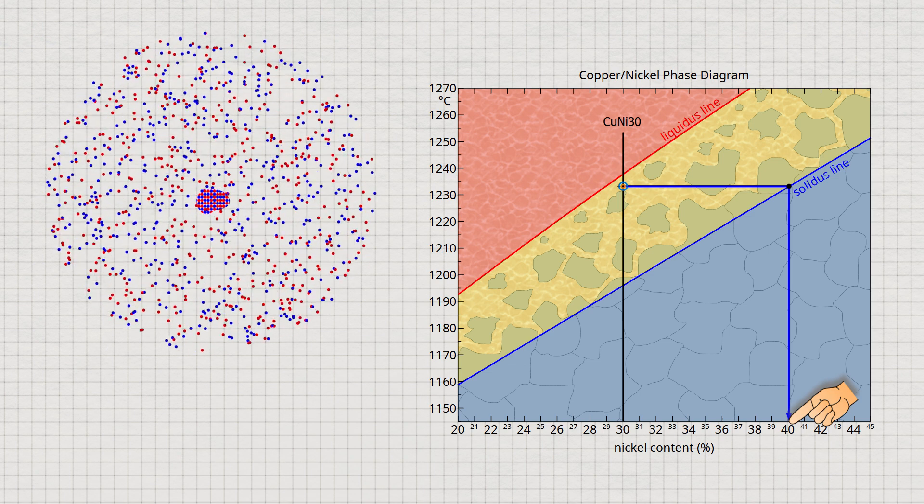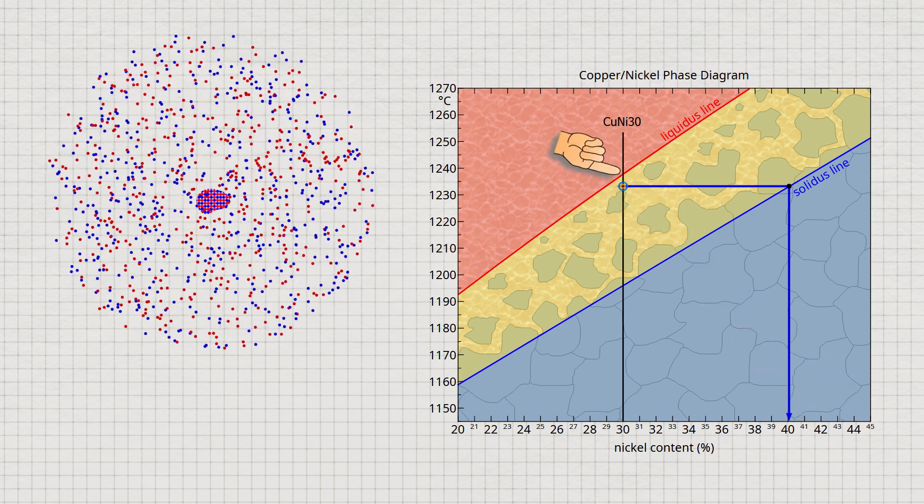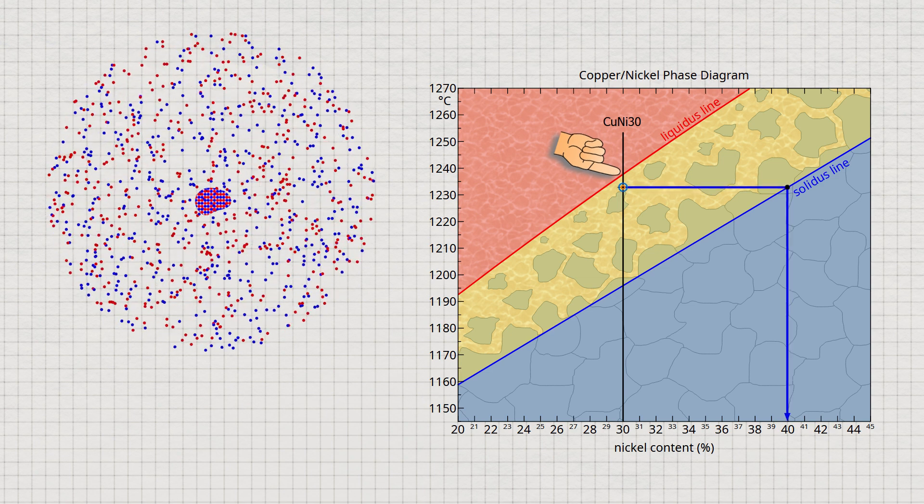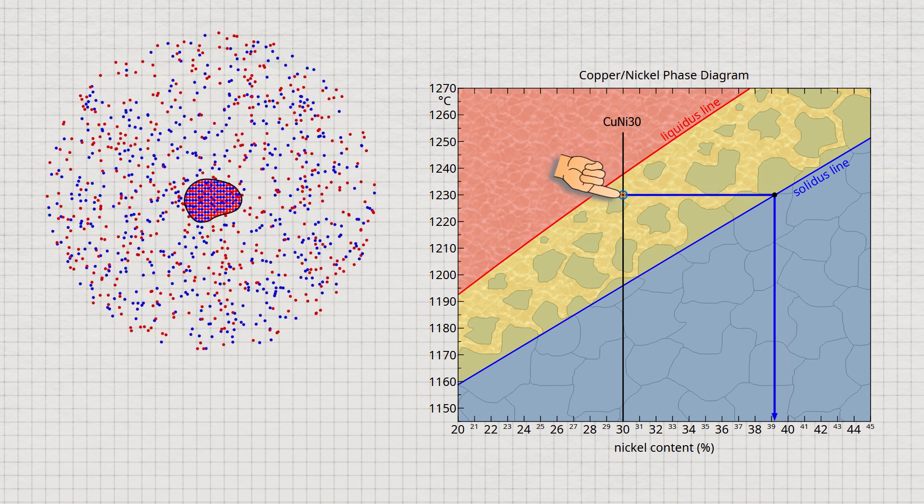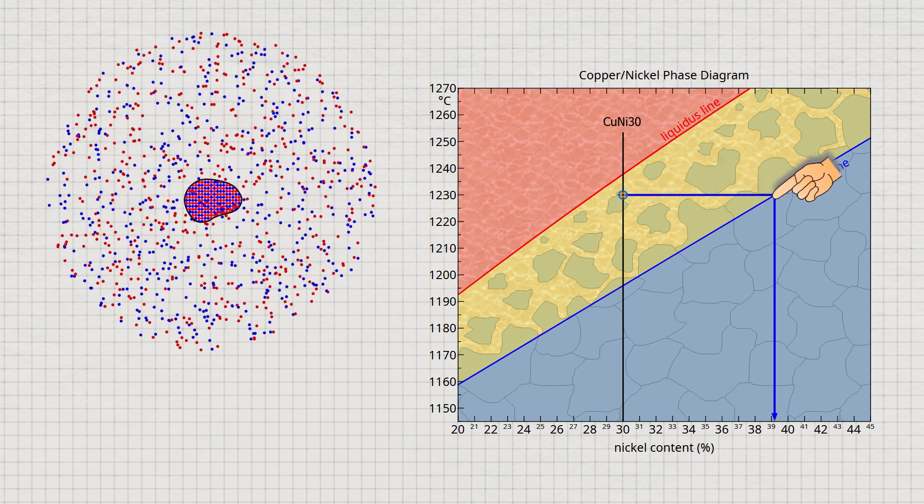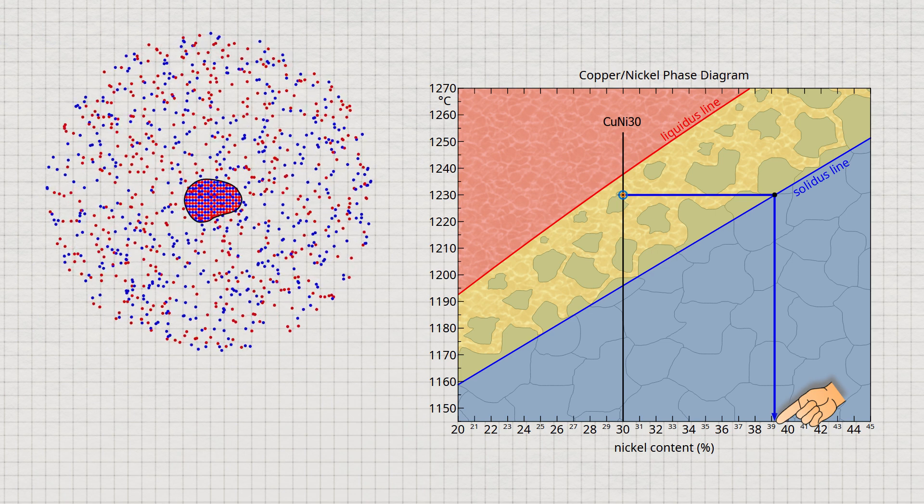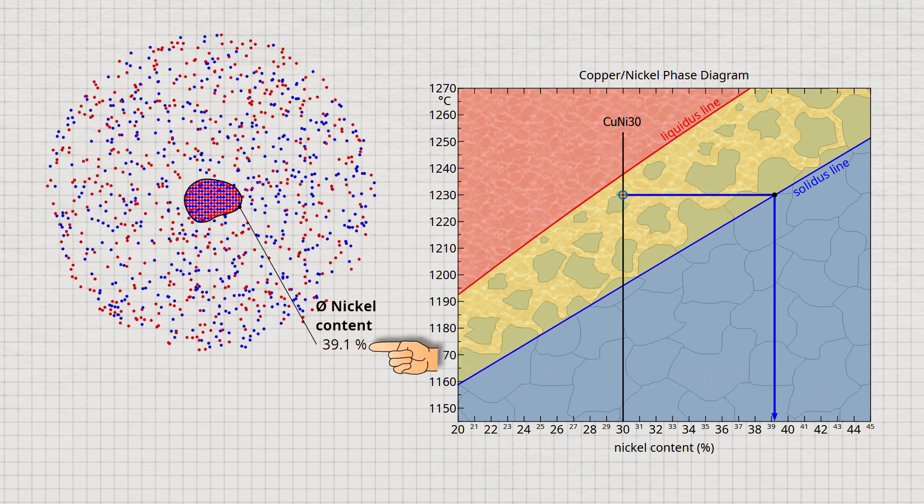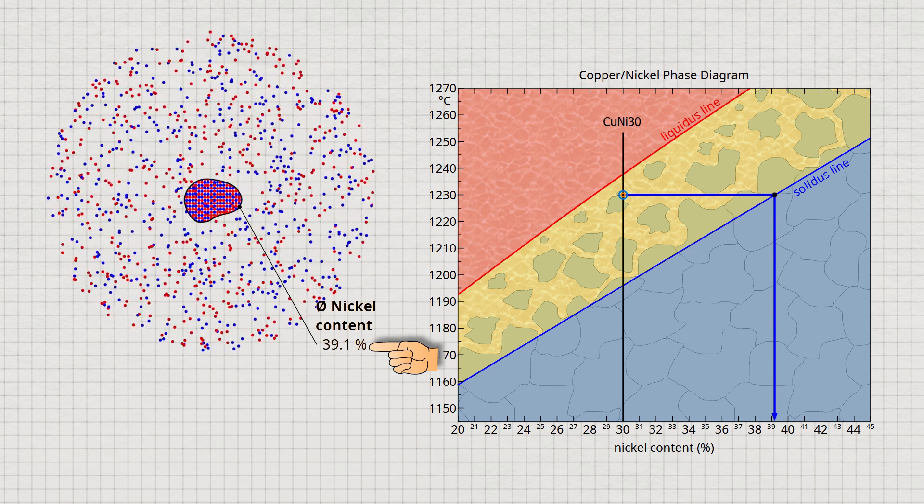Let us first look at the solidification process from the solidification temperature of 1,238 degrees Celsius to a temperature of 1,230 degrees Celsius. The solid solution formed up to this point has an average nickel content of 39.1%. Ultimately, this nickel concentration is only an average over the entire grain formed to that point.